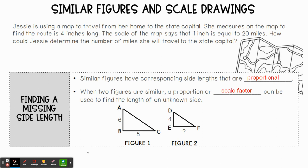We're going to put AB over BC. So we're working with the original. Here is my ratio AB over BC, which is 6 over 8. We're going to make that equal to DE over EF. This side length corresponds with this side length, which is why they're both on top, and this side length corresponds with this side length, which is why they're both on bottom.